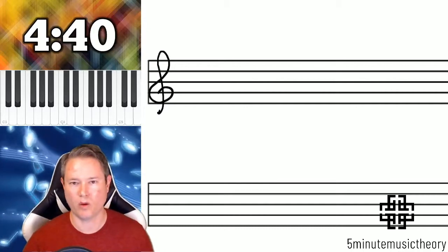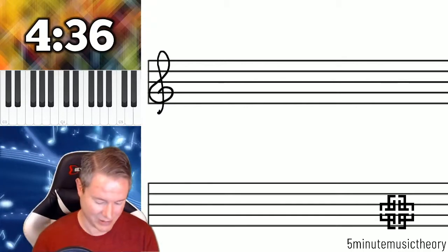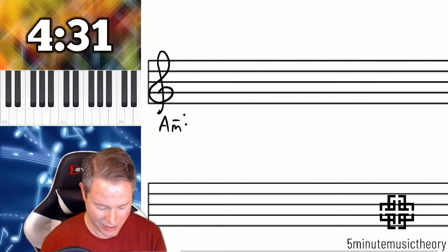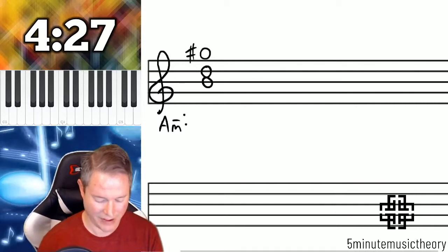Now you might be thinking, what about if there's an accidental? Don't we need to know that? And if you weren't thinking that, I'm going to make you think that. So we're going to take, for example, in the key of A minor, this chord.